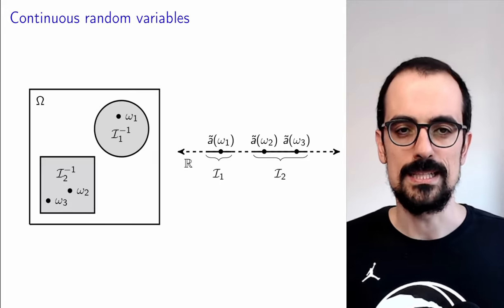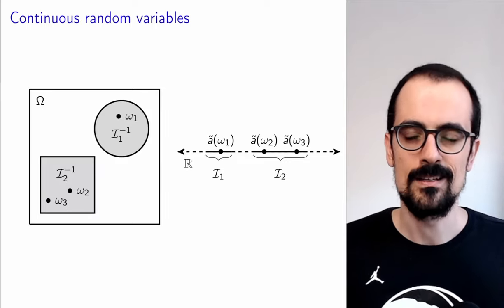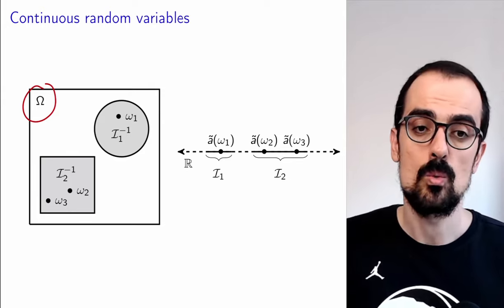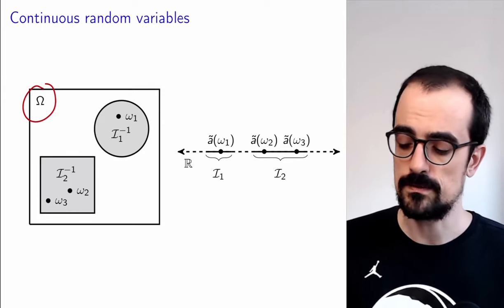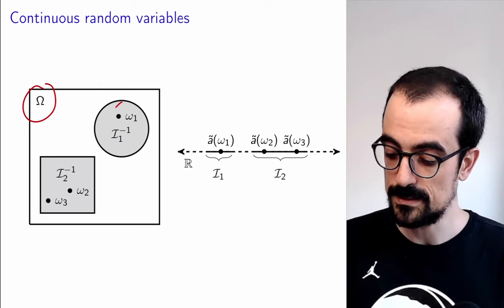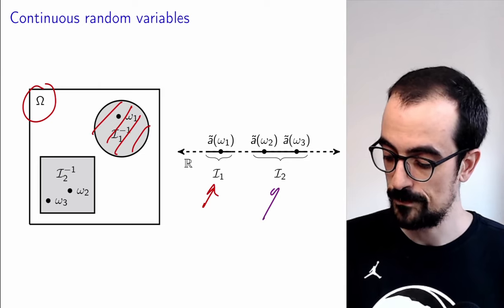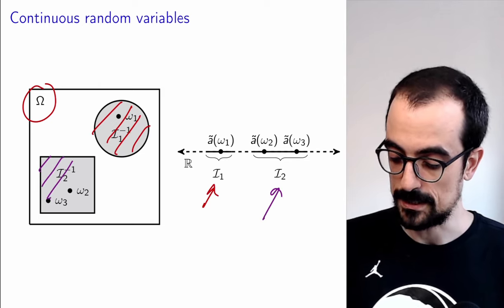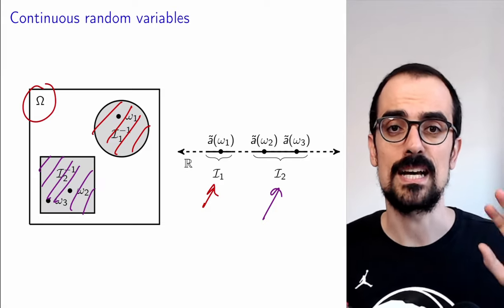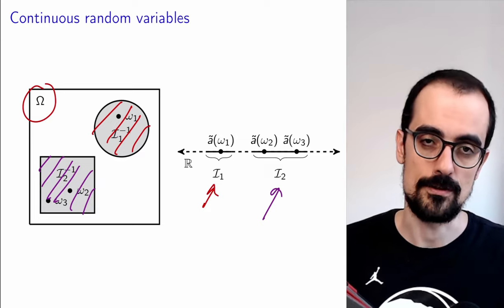For that, we need to go to the definition of continuous random variables. Remember that mathematically, a random variable is a function from a sample space to the real line. What does that function need to satisfy? It needs to satisfy that the events mapping to different intervals — I1 and I2 — have to be measurable, meaning there is a probability assigned to them and they belong to the collection in the underlying probability space.